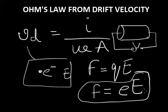The force is small e into capital E, and we have drift velocity which is I divided by NEA. Now let us move on further and see how we can get Ohm's law from drift velocity.